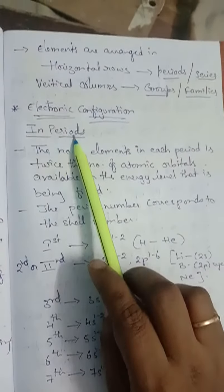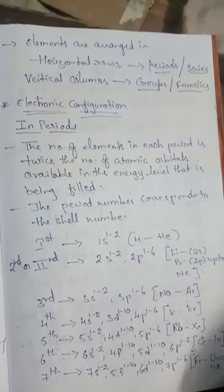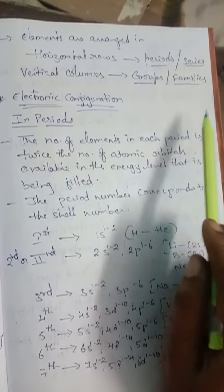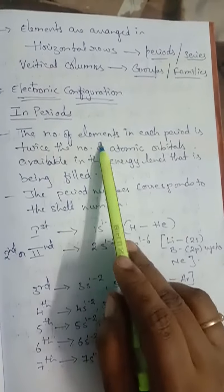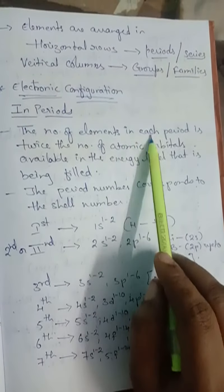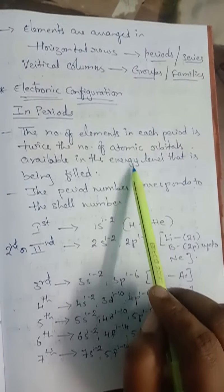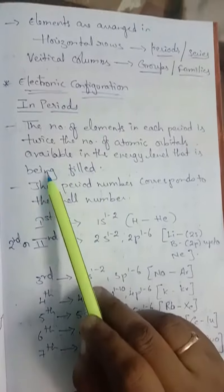First we are going to deal about periods. What do you mean by periods in a long form of periodic table? The horizontal rows are called periods or series. In periods, the number of elements in each period is twice the number of atomic orbitals available in the energy level that is being filled. The period number corresponds to the shell number.